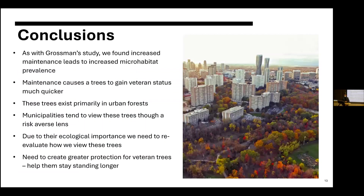In conclusion, as with Grossman's study, we found that increased maintenance leads to increased microhabitat prevalence in urban centers. Maintenance causes trees to gain veteran status much quicker, meaning we're seeing younger trees with veteran characteristics similar to older ones like the comfort maple. Veteran trees primarily exist in urban forests rather than rural ones, so it's important to take action in urban forests. However, municipalities tend to view these trees through a risk-averse lens and prematurely fell them, despite the fact that they could stand longer and provide important habitat and resources. Due to their ecological importance, we need to re-evaluate how we view these trees and create greater protection for veteran trees to help them stay standing longer.